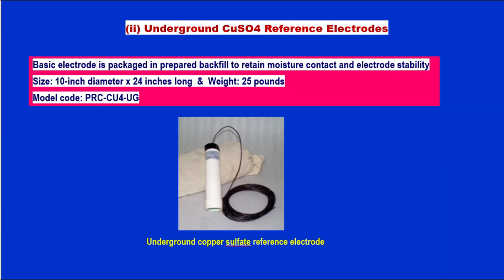The standard copper sulfate electrode is tested for ±10 mV. The underground copper sulfate reference electrode uses a pad backfill to retain moisture, contact, and electrode stability. Size: 10-inch diameter, 24 inches long, weight 25 pounds. Model code: PRCCU4UG. The image provides a view of the underground copper sulfate reference electrode.